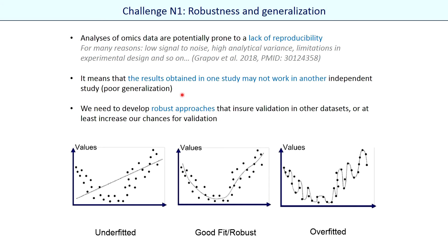When we work with omics data there are some problems or challenges that we should take into account and pay special attention to during data analysis. We will discuss here three of them and we will start with the robustness and generalization problem.